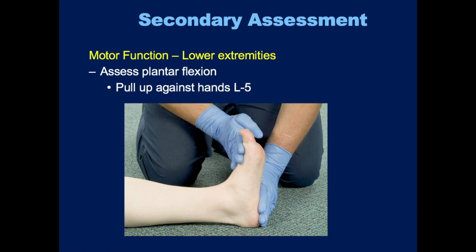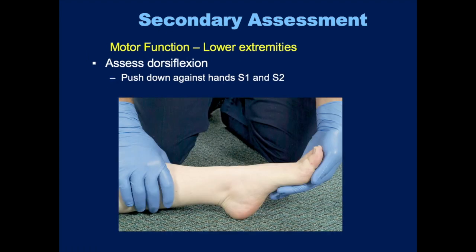For the lower extremities, similarly test motor function by having them push up and push down against your hand — testing their flexion and dorsiflexion. The EMT in this picture is assessing plantar flexion — saying pull up against my hand — which evaluates L5. And here is the dorsiflexion, where you have the patient push down against your hand, which evaluates S1 and S2.